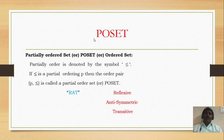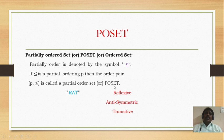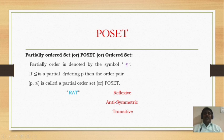Now, poset — this is a very important definition and it is asked many times in examinations. Poset means it is also called a partial ordered set. The definition is: partial order is denoted by the symbol ≤. If ≤ is a partial ordering on P, then the ordered pair (P, ≤) is called a partial ordered set or simply a poset. Poset means RAT — R means reflexive, A means anti-symmetric, and T means transitive. A poset must satisfy the reflexive, anti-symmetric, and transitive properties.